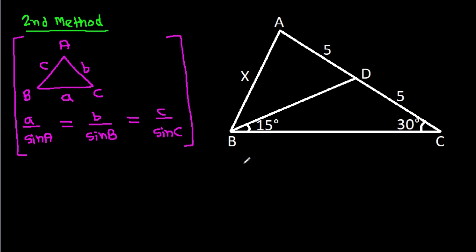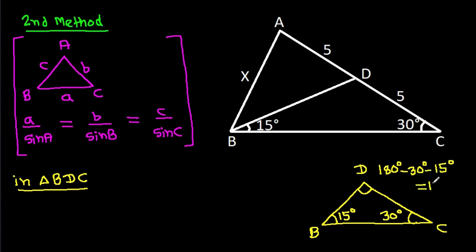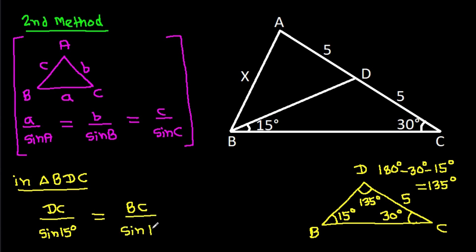Here, in triangle BDC, angle DCB is 30 degrees and angle DBC is 15 degrees, so angle BDC equals 180 minus 30 minus 15, that will be 135 degrees. DC is 5, so by the sine rule: DC divided by sin 15 degrees equals BC divided by sin 135 degrees.